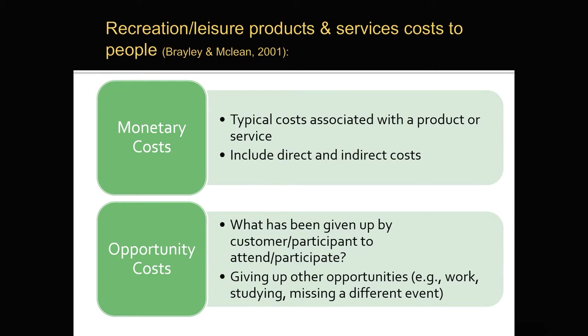We have monetary costs, and I'm going to use the example of attending a hockey game. Monetary costs are typical costs associated with a product or service, and they can include direct and indirect costs. Direct monetary costs for attending the game would be purchasing the ticket, parking fees, purchasing a t-shirt to show loyalty, and going to the concession stand. Indirect monetary costs are things that still cost you money — for example, gas to get to the game, or a babysitter for children. All of these require an exchange of actual money.